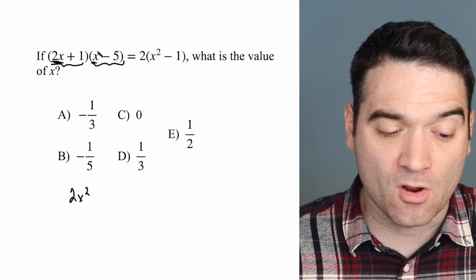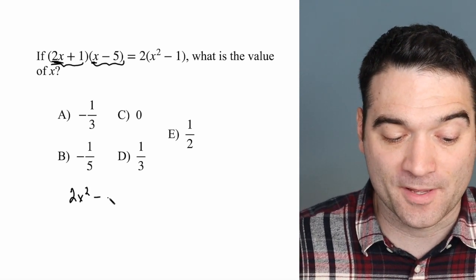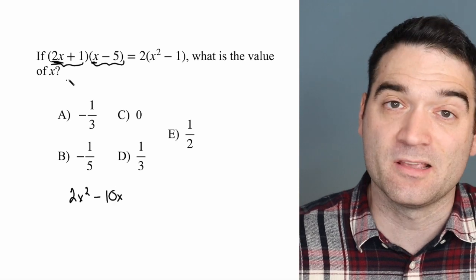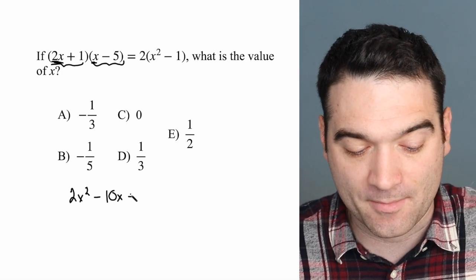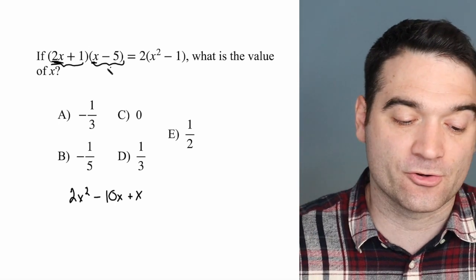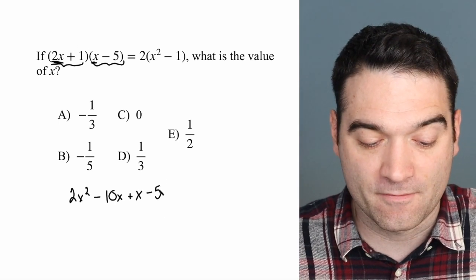The outer terms are 2x and negative 5, so I'm going to multiply those together for negative 10x. The inner terms are 1 times x, that makes x, and the last term is negative 5.